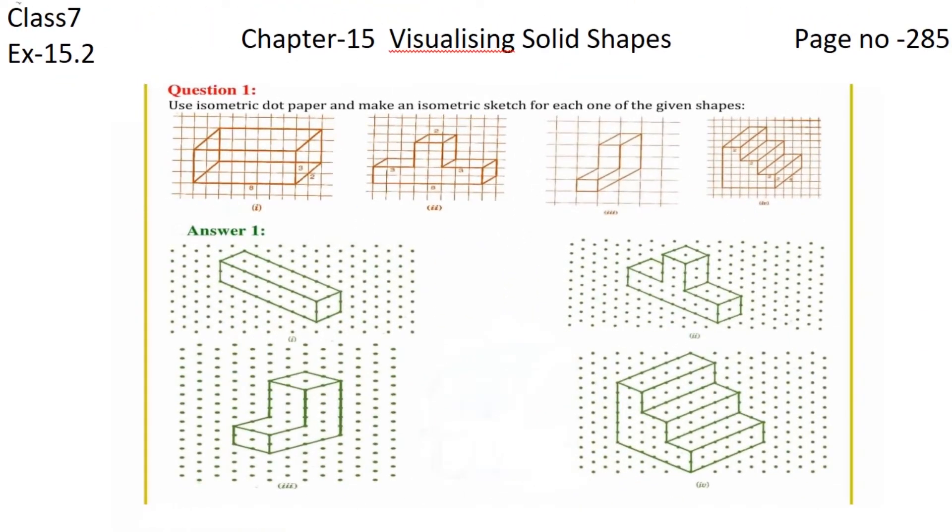Hello everyone, this is Preeti. We are here with another exercise, Exercise 15.2, page number 285, question number one. Use isometric dot paper and make an isometric sketch for each of the given shapes. This is the first shape we are having, so we are going to make the isometric sketch of this one.